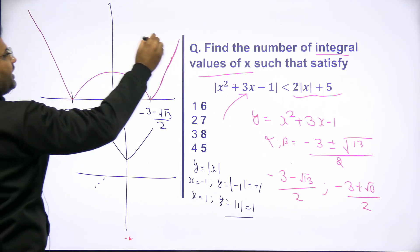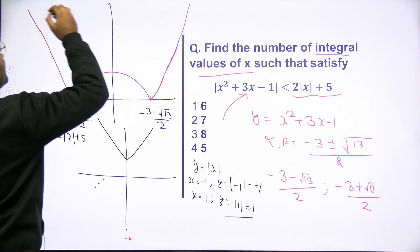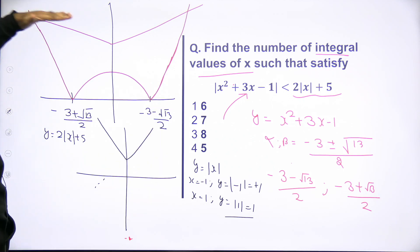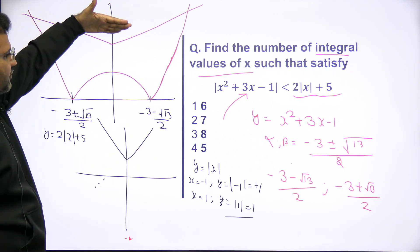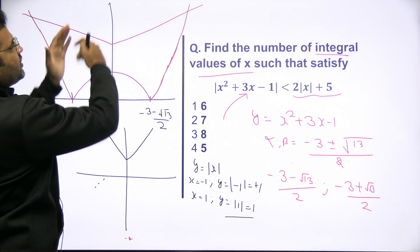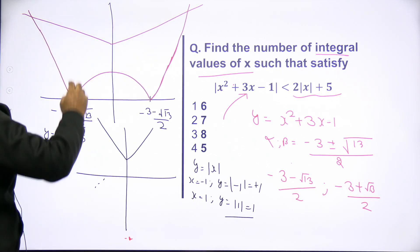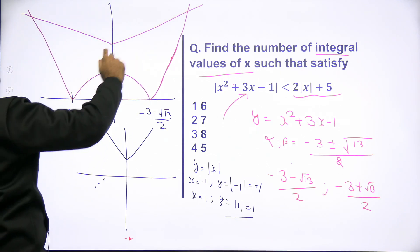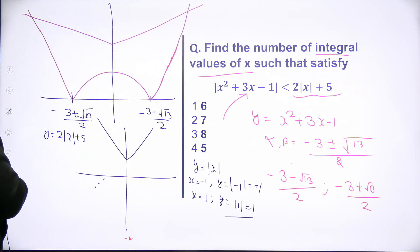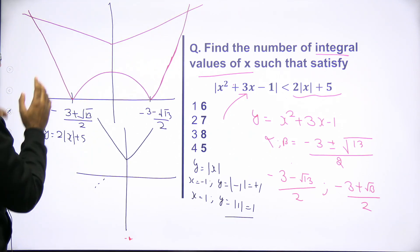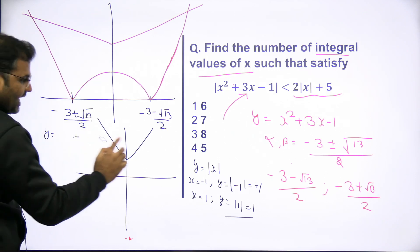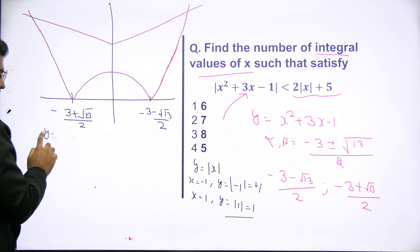Now let's look at both graphs together. The old graph is our left-hand side expression, and y equals 2 mod of x plus 5 is the right-hand side. Avoid looking at the exact scaling since this is a rough sketch. The slope of the V-graph should be more inclined towards the y-axis. We just need to find the points of intersection. Once you know how to read this graph, you can answer the question in a fraction of seconds.